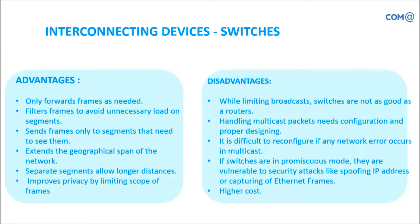An L3 switch can also function as a router. It is difficult to reconfigure if any network error occurs in multicasting — multicast connections will mostly not be used. If switches are in promiscuous mode, they are vulnerable to security attacks like spoofing IP addresses or gaps in Ethernet frames. Cost is higher compared to hub or other connected devices, but less than the router.